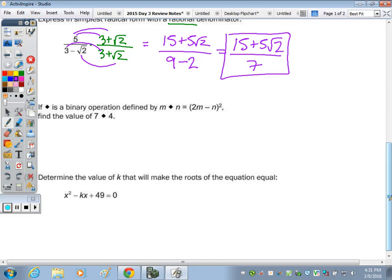And number 4, we have a binary operation that's defined by this here. So if I'm going to find 7 diamond 4, that's telling me that m is 7, n is 4, and I plug it in here.